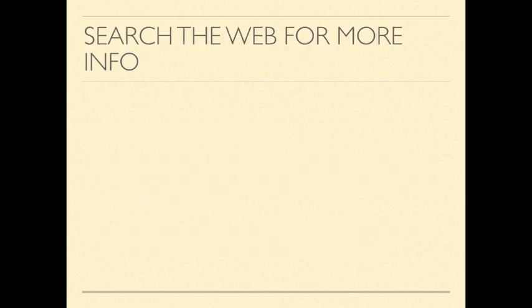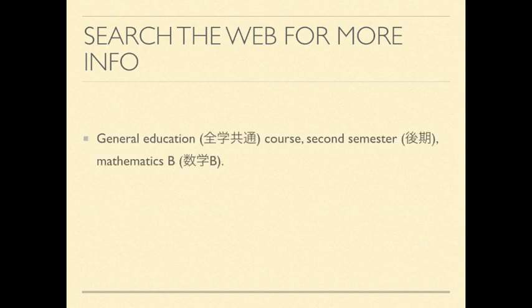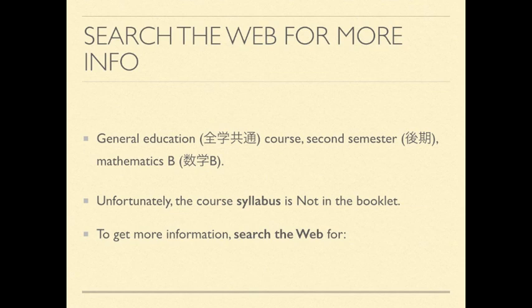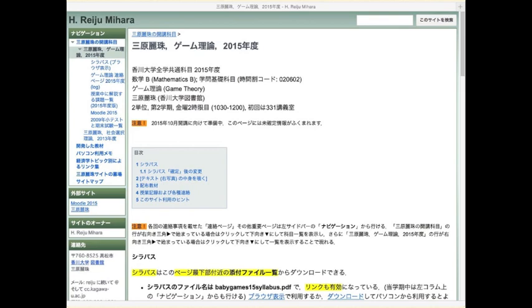Okay, that was why you should consider taking my course. It's a general education course given in the second semester whose official title is Mathematics B. Unfortunately, the course syllabus is not in the book web since the university administration treats me badly. So to get more information, you need to search the web for yourself. Use the following keywords: Mihara Game Theory 2015. You'll find a web page like this. Make sure the year is correct.